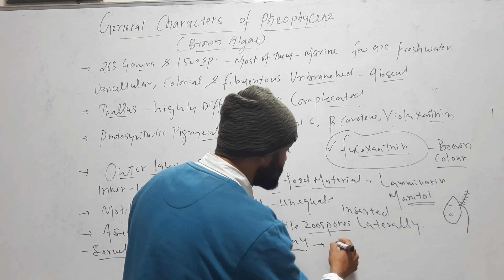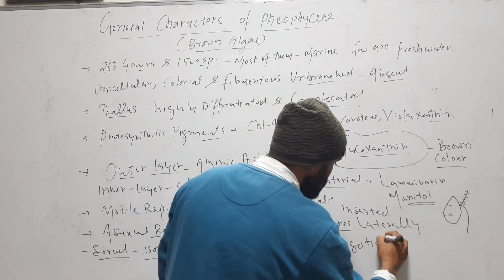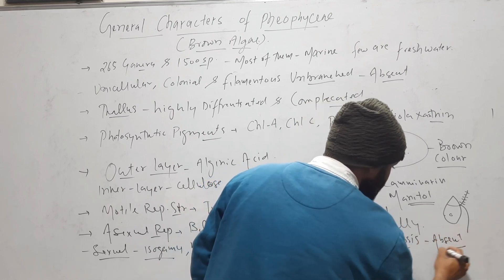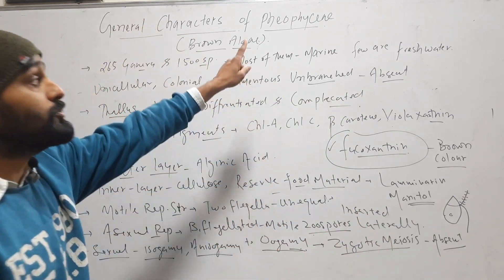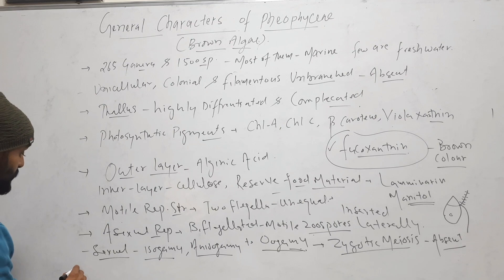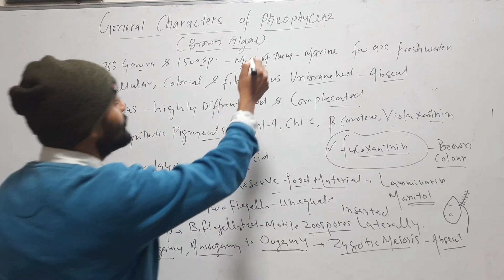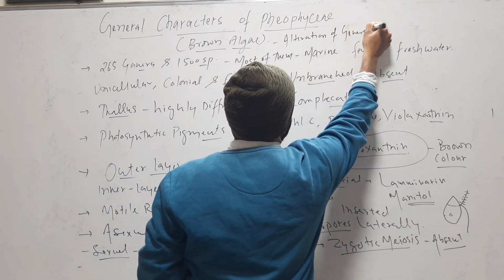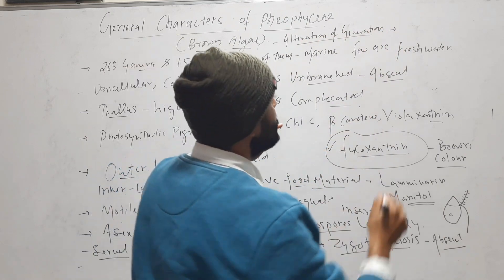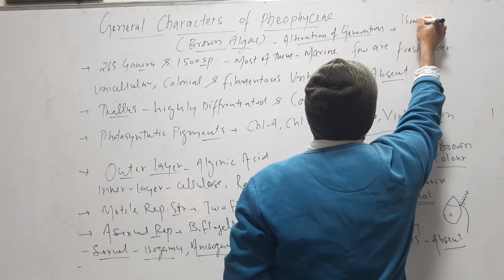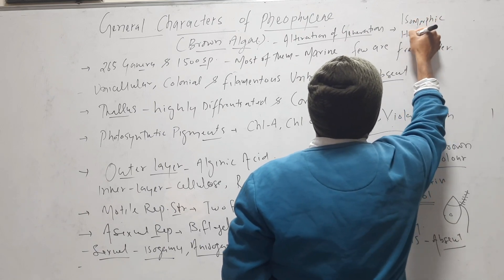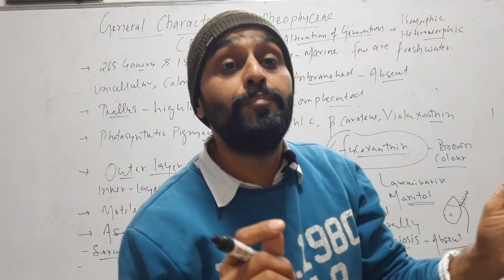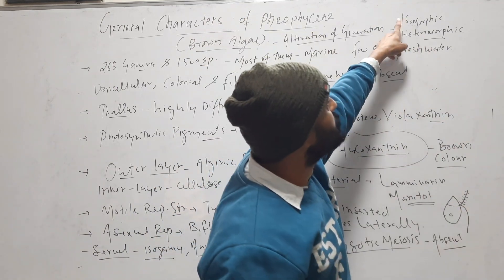In Phaeophyceae, zygotic meiosis is absent. Zygotic meiosis, which is very common in algae, is absent in the case of Phaeophyceae. Alternation of generation may be isomorphic or heteromorphic — meaning both gametophyte and sporophyte may be morphologically similar (isomorphic) or different (heteromorphic).